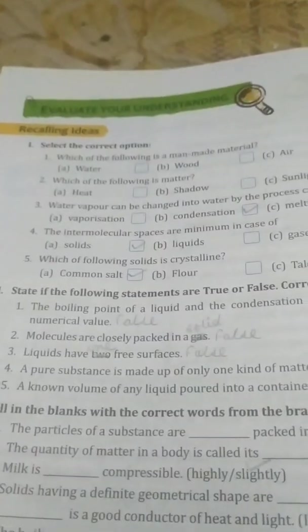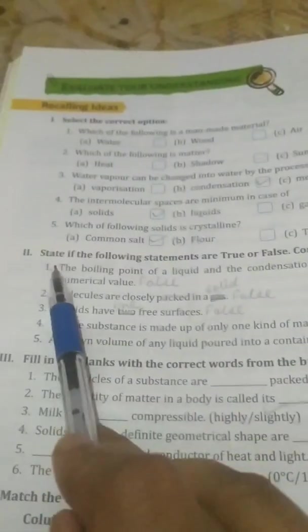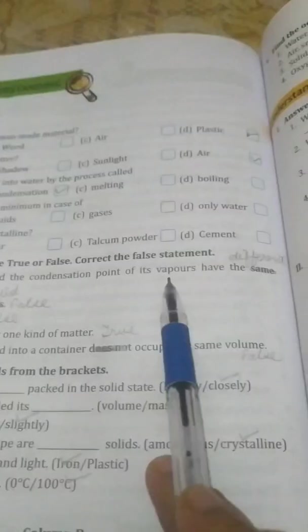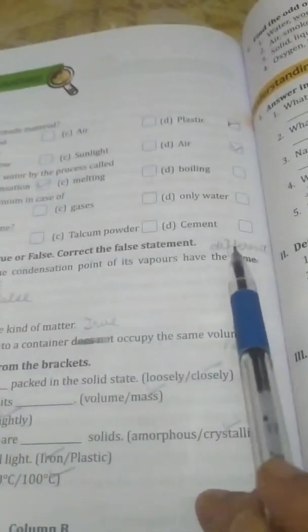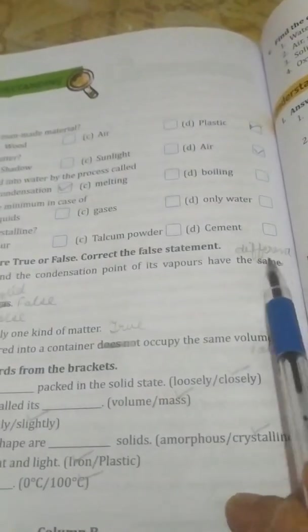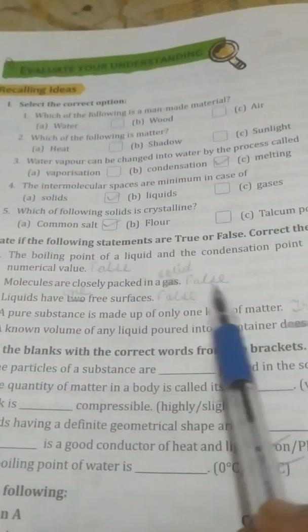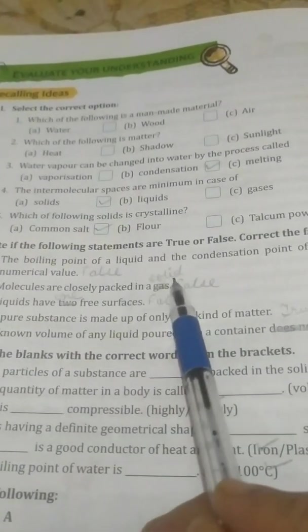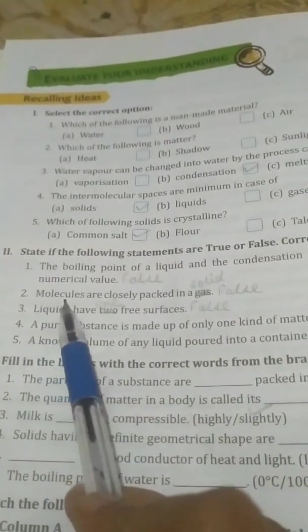Now second, state if the following statements are true or false. Correct the false statement. First, the boiling point of a liquid and the condensation point of its vapor have the same numerical value. So it is false. Instead of same, different will come. So cut the same and you have to note down different. Second, molecules are closely packed in gas. So it is false. Molecules are closely packed in solid. Or students, you can do one more thing, you can write molecules are loosely packed in gas, but option remains false only.